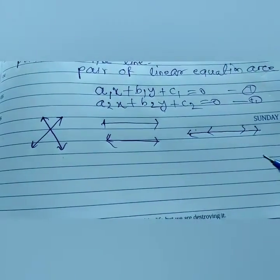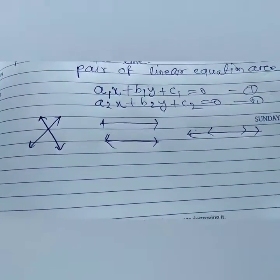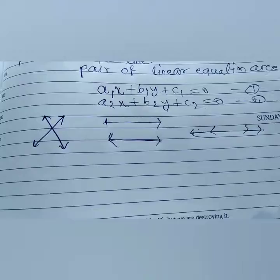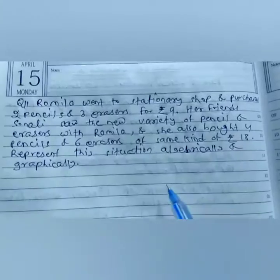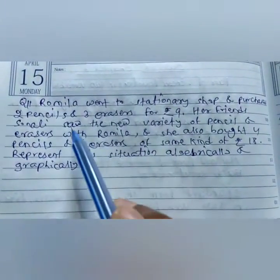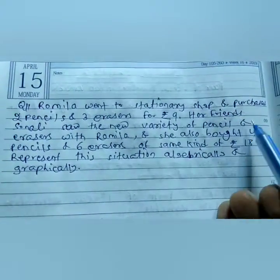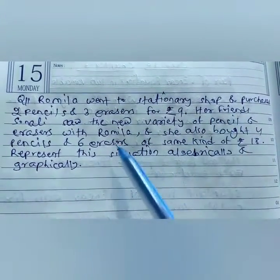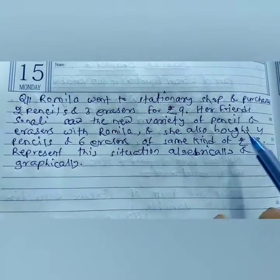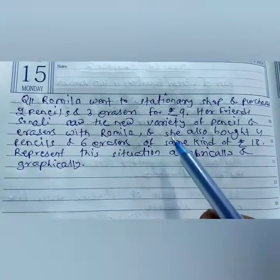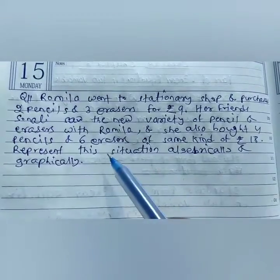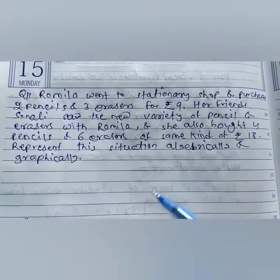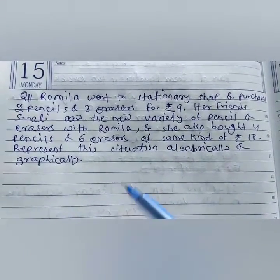We will look at how we can get an algebraic expression from a word problem and how we can represent it on a graph. Let's solve a word problem. The question is: Romila went to a stationary shop and purchased 2 pencils and 3 erasers for 9 rupees. Her friend Sonali saw the new variety and also bought 4 pencils and 6 erasers of the same kind for 18 rupees. Represent this situation algebraically and graphically.